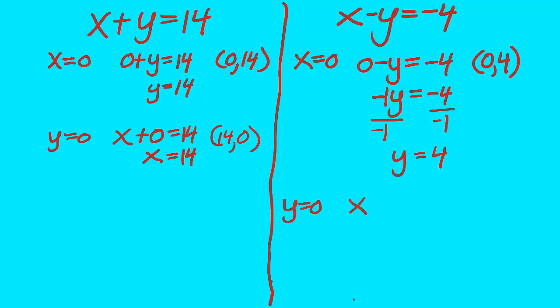If I let y equals zero, I'll have x minus zero equals negative 4. So x equals negative 4, which means the point (-4,0) is on the line on the right. I now have two points for each line. Now I can graph.